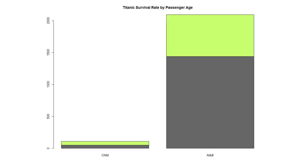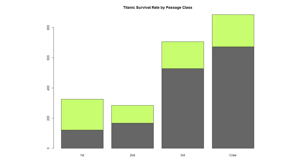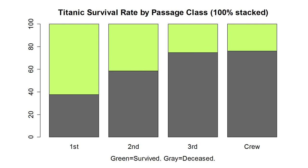Here are more stacked bar charts. Passenger age — it's fairly sad that they only saved about half the children. Passenger class — guess you get what you pay for: about a two-thirds chance of being saved in first class, but maybe a one-in-five chance in third class. The crew largely went down with the ship. You can make a 100% stacked chart to really see the differences in rates — first class was saved at very high rates, third class and crew not so much. Definitely a money effect going on. If you're going on the Titanic, it paid to be rich and female.